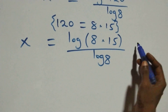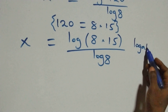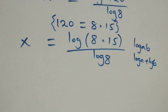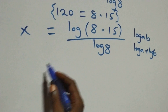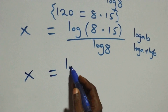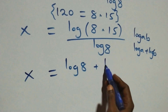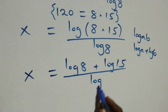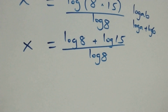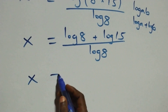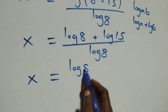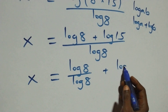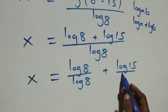This follows from the law of logarithms: when we have log(a times b), this is the same as log a plus log b. So what we have here becomes x equals (log 8 plus log 15) over log 8. We then separate this into two fractions: x equals log 8 over log 8, plus log 15 over log 8.